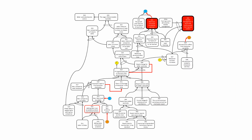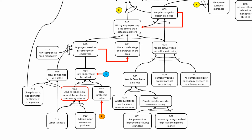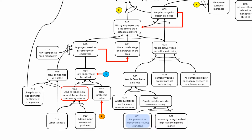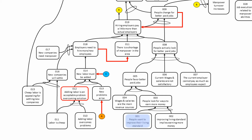A current reality tree reads from bottom to top, and each entity has been numbered so you can easily follow what I'm reading and where I am — I will also highlight it on the screen. Starting with entity number one: people want to improve their living standard. In a current reality tree, you read the entity starting with 'if.' If people want to improve their living standard — and you can see the ellipse above entity one and entity two, it's an AND connector, a logical AND — and entity two: improving living standards implies earning more money, then entity three: people look for ways to earn more money.